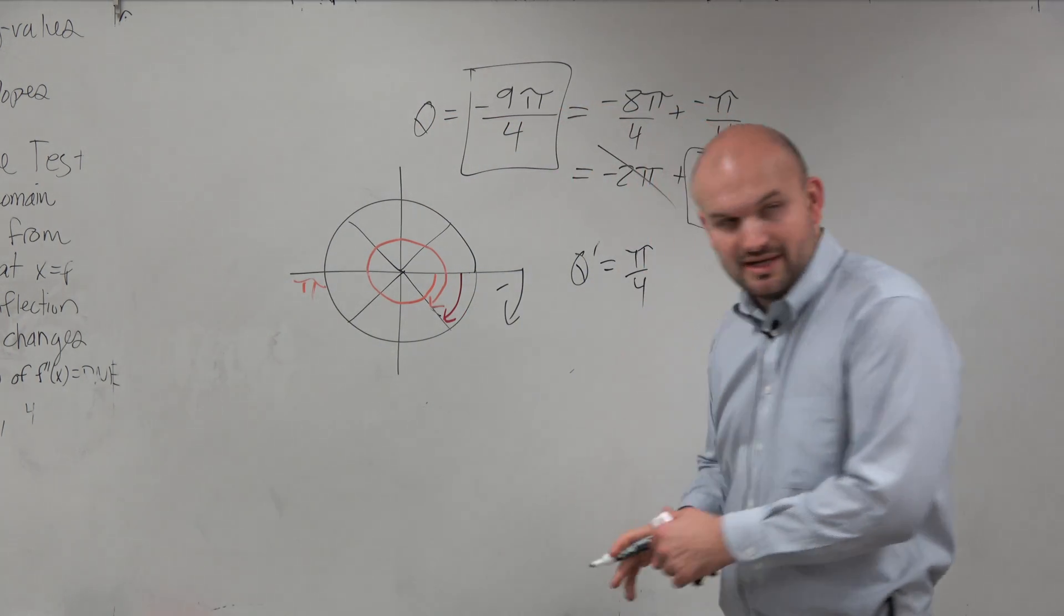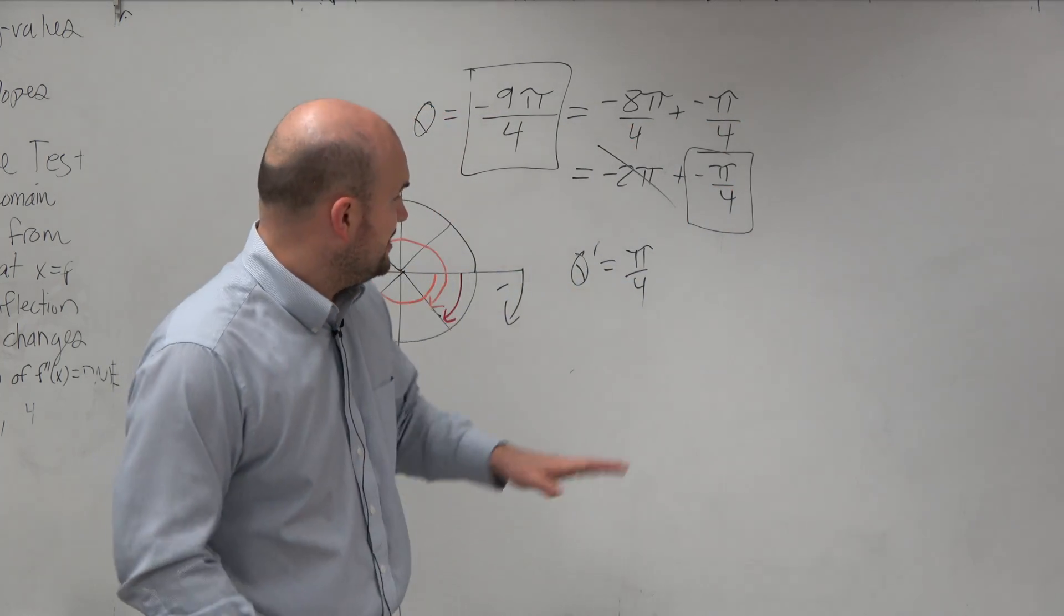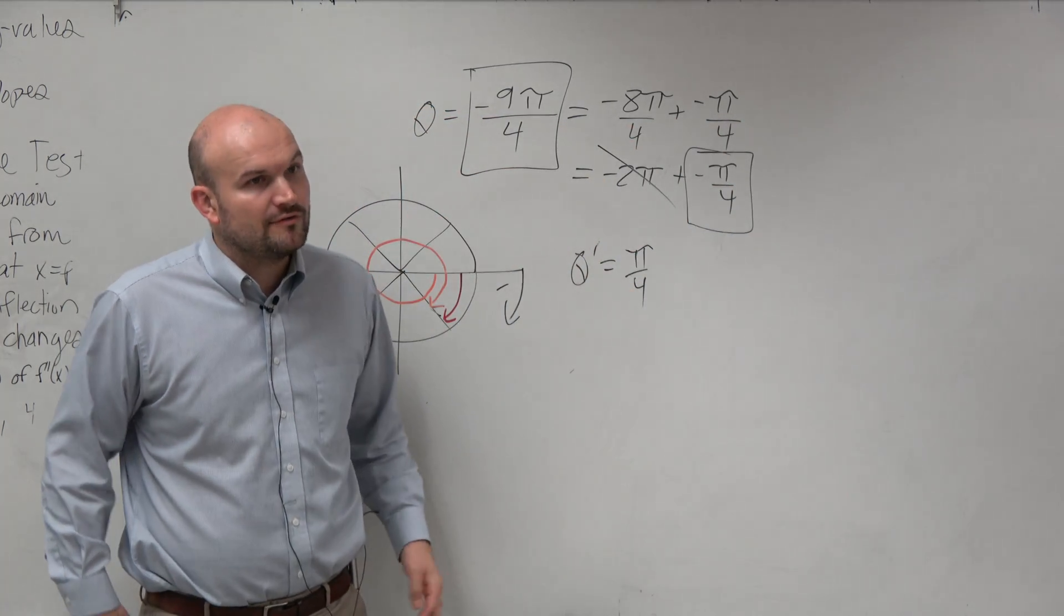Pi over 4. Because just like I said, if we're talking about angles and radians, we're going to keep angles and radians. So therefore, you guys can see the reference angle is just pi over 4.